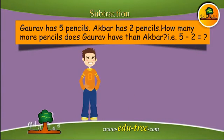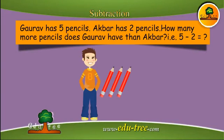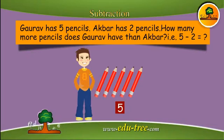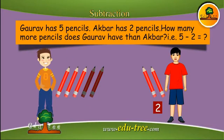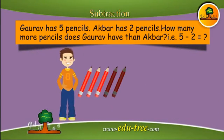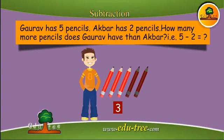Now let us see how we use subtraction while making a comparison. Gaurav has five pencils and Agba has two pencils. How many more pencils does Gaurav have than Agba? That is five minus two. The answer is three.